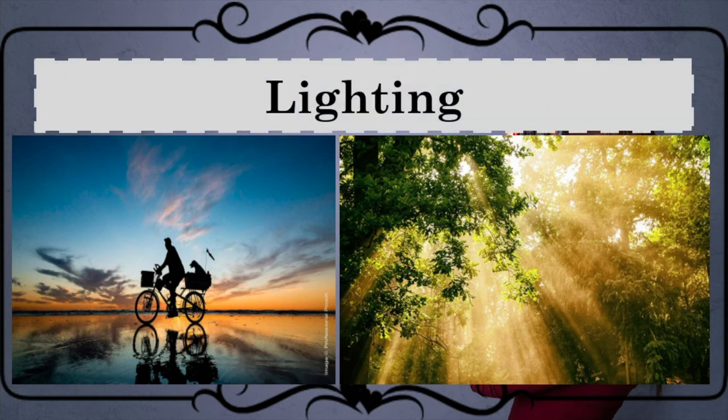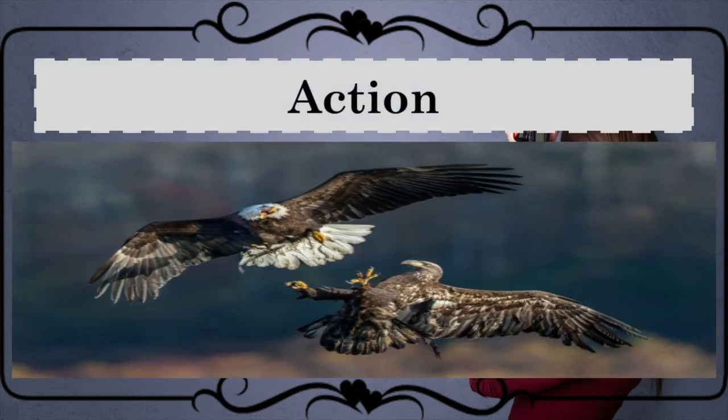Next, lighting. A camera's light might produce underexposed or overexposed images. Even the position of light in an image can make your photos come alive by creating shadows, depth, and dimension. Next, action. Even in photography, motion can be expressed in still photos.